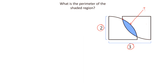Let this be one point of intersection — let this be A. This is the second point of intersection of these two quarter circles — let this be B. This point is C and this point is D.